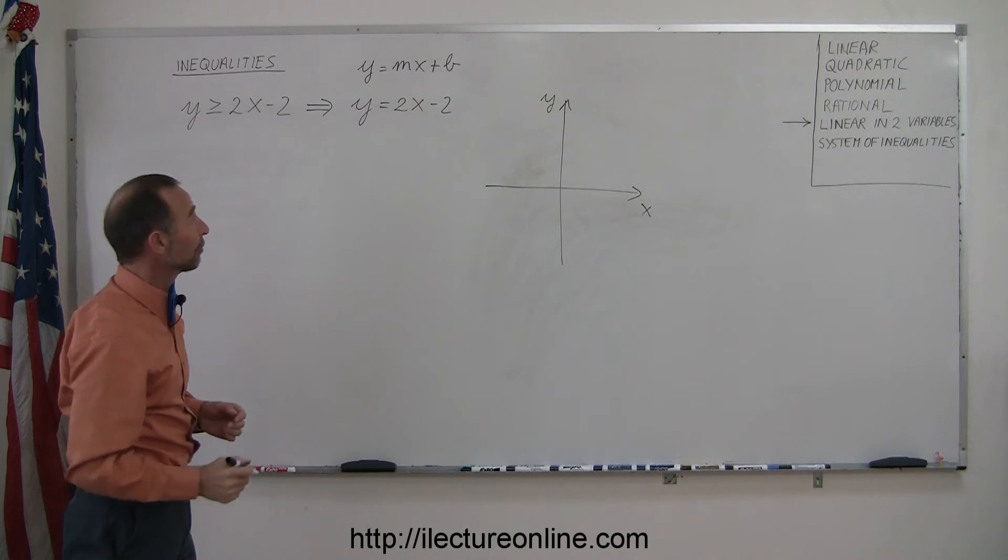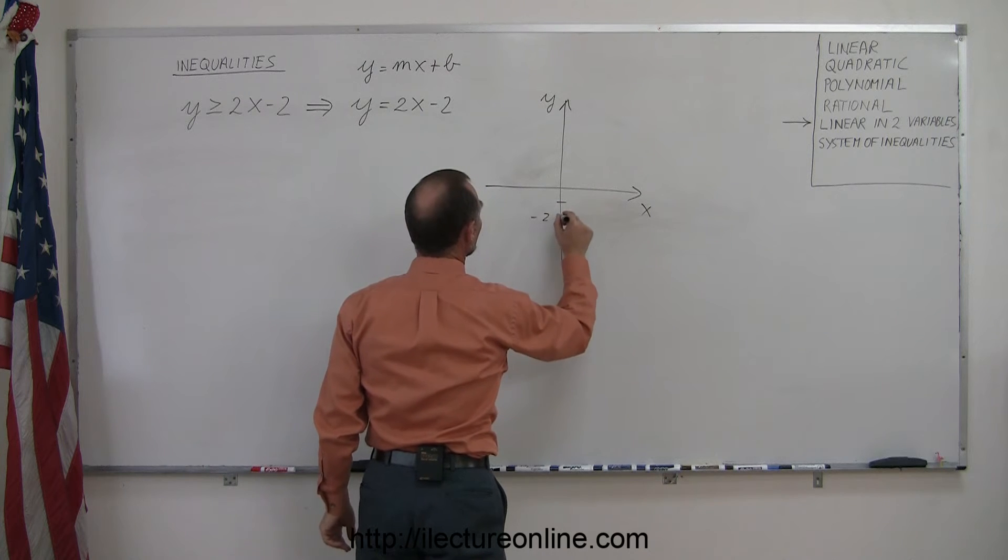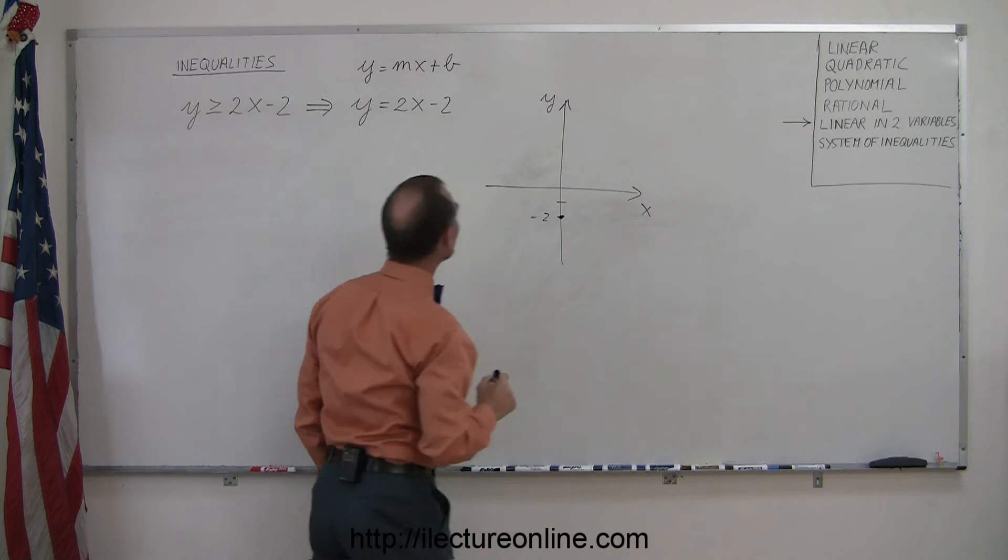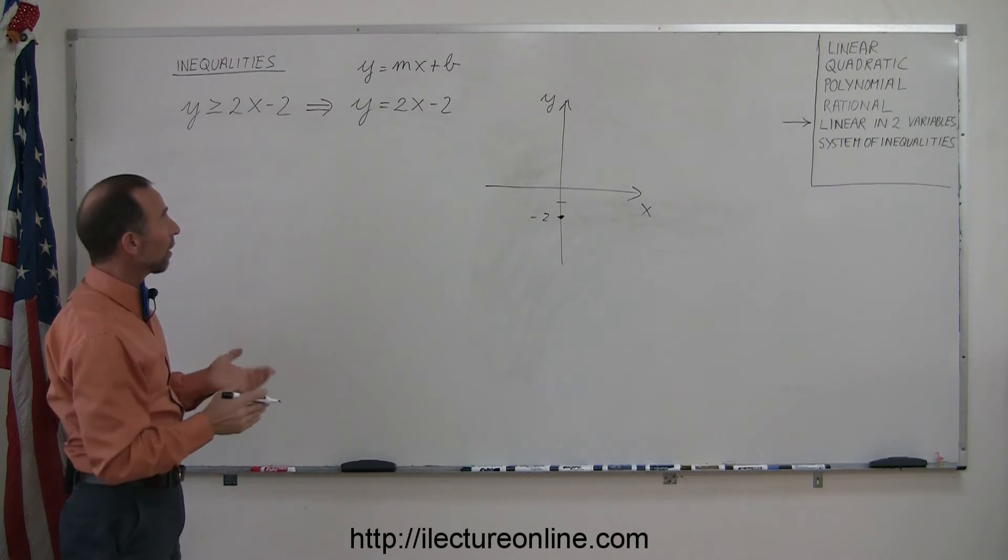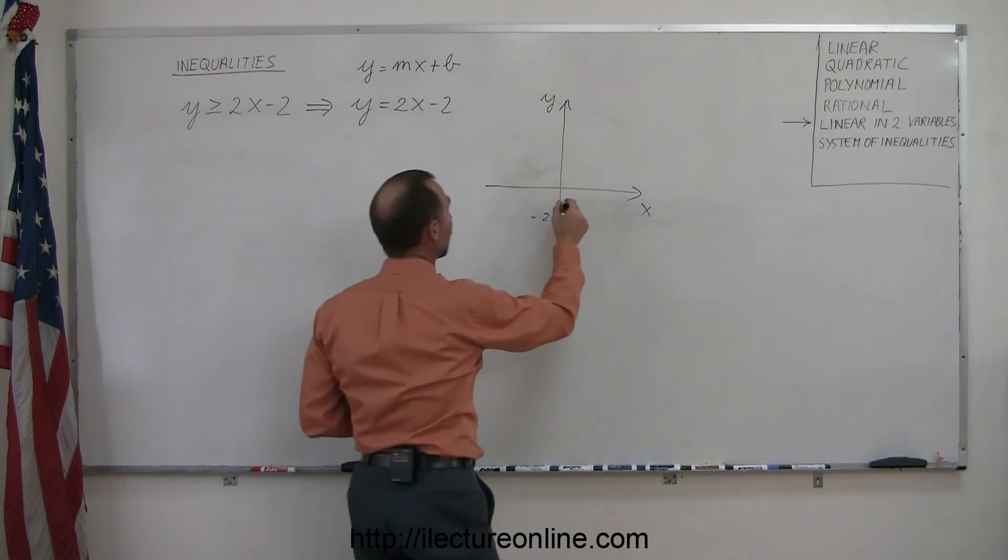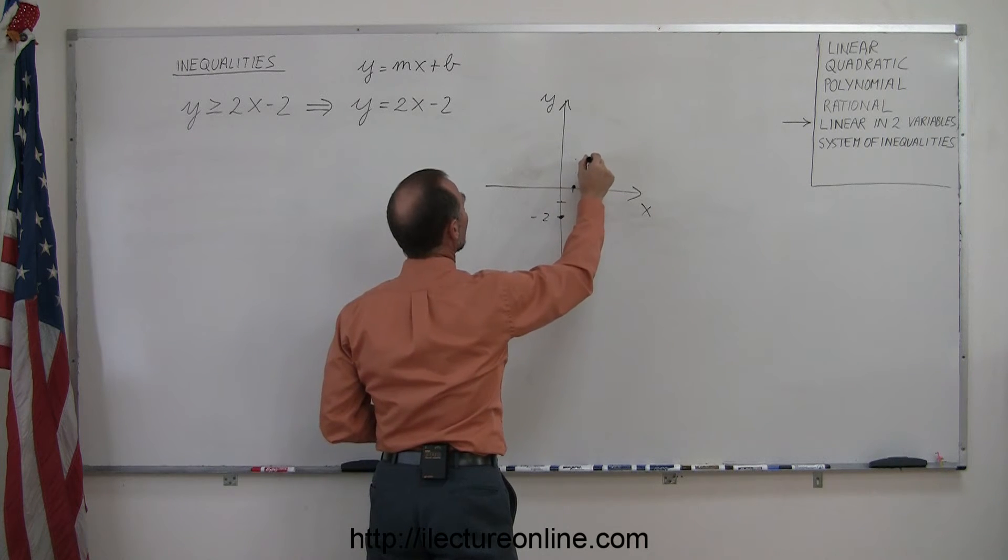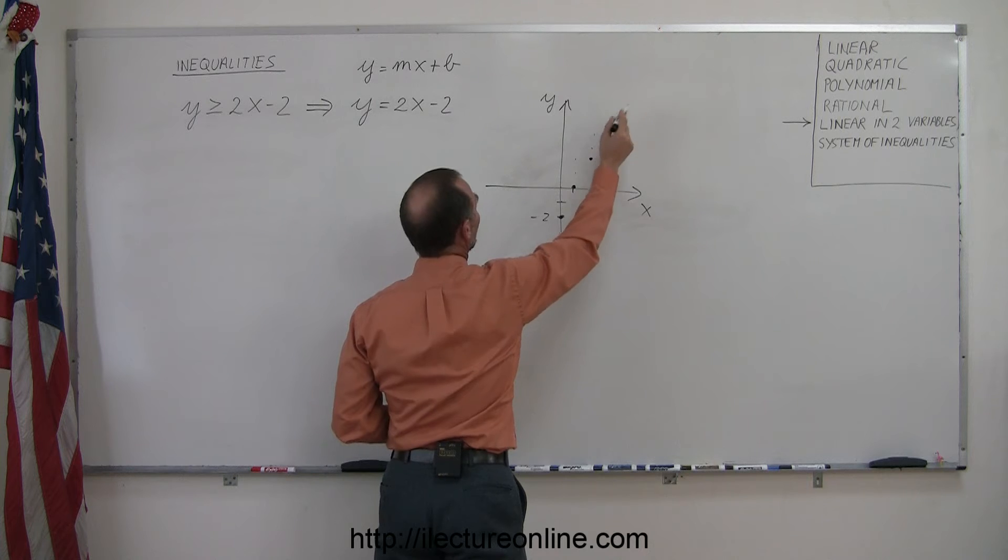Let's graph that line first. Finding the intercept, y = -2 is down here, so we know the line goes to that point. Realizing the slope is a positive 2, which means a rise of 2 for a run of 1, we go up 2 and over 1, up 2 and over 1, up 2 and over 1, and so forth.